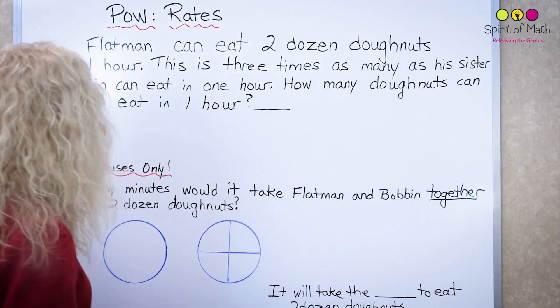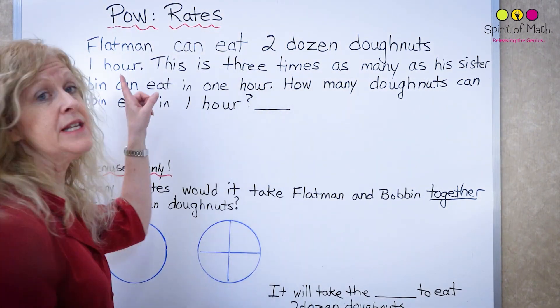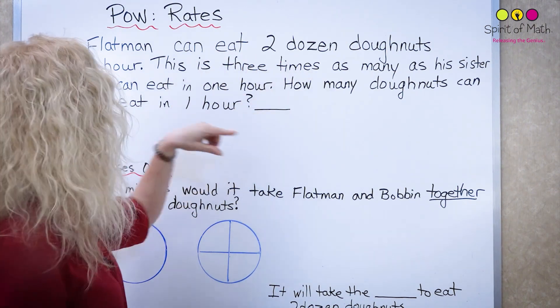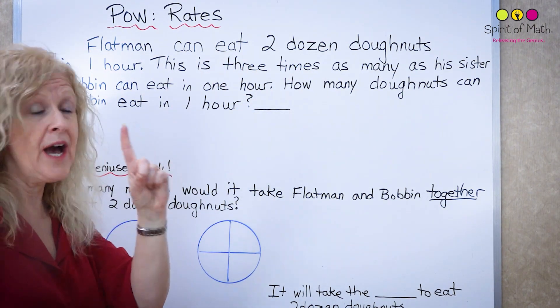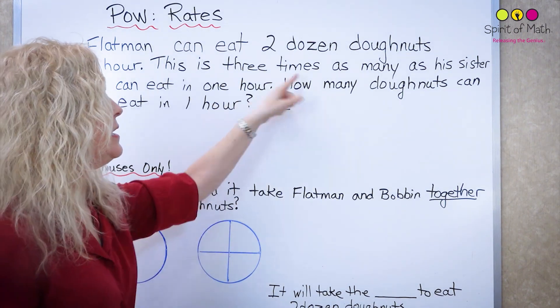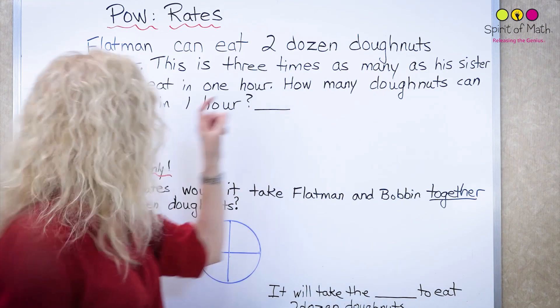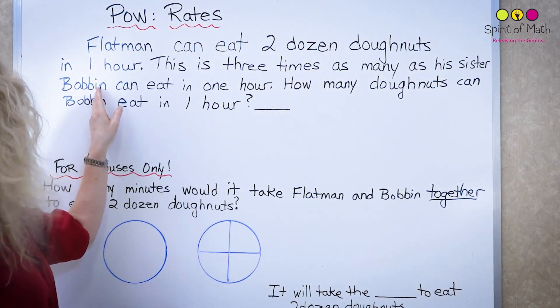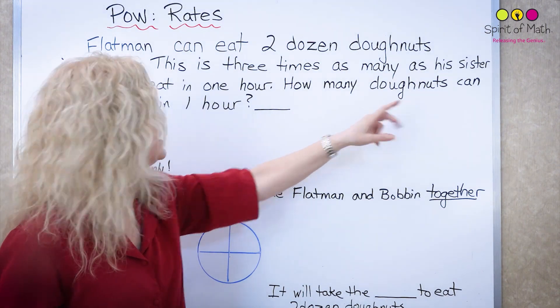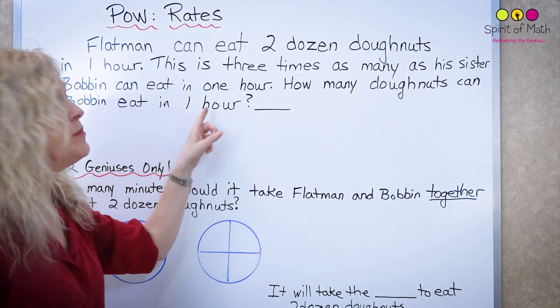So this is what the question is. The question says Flatman can eat two dozen doughnuts in one hour. This is three times as many as his sister Bobbin can eat in one hour. How many doughnuts can Bobbin eat in one hour?